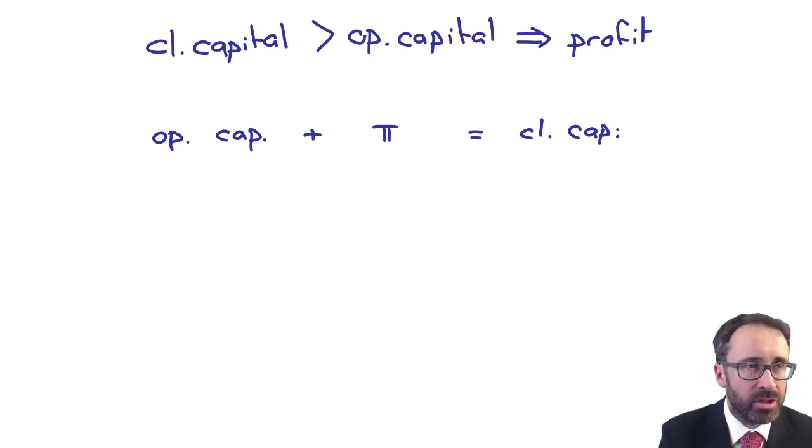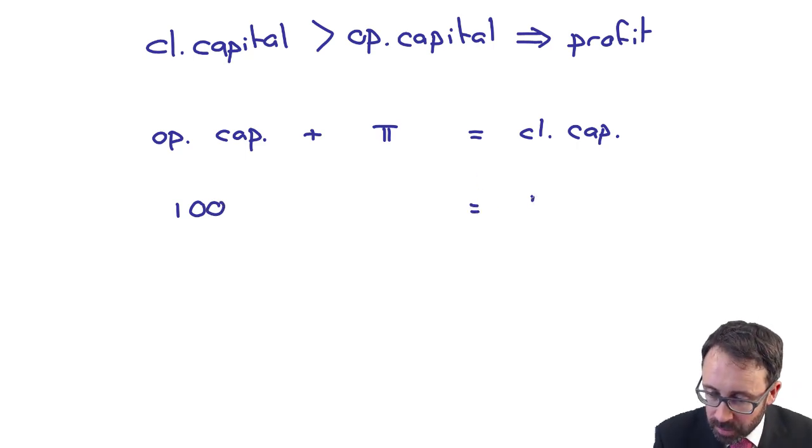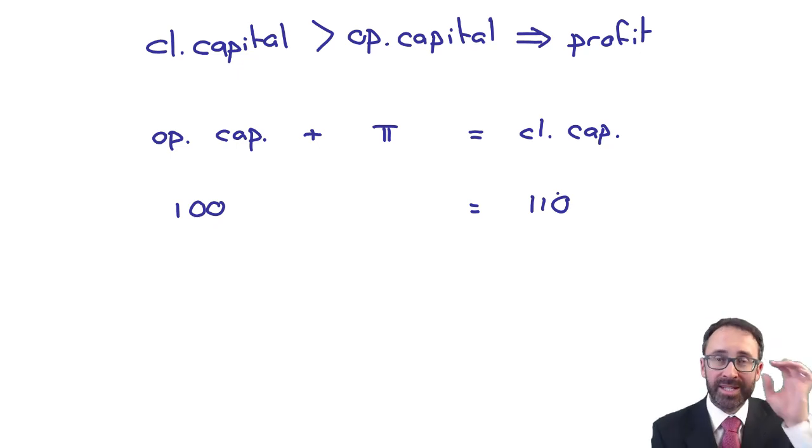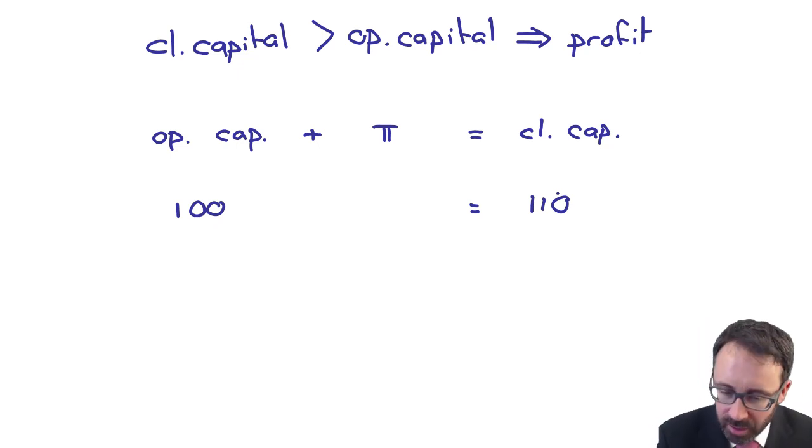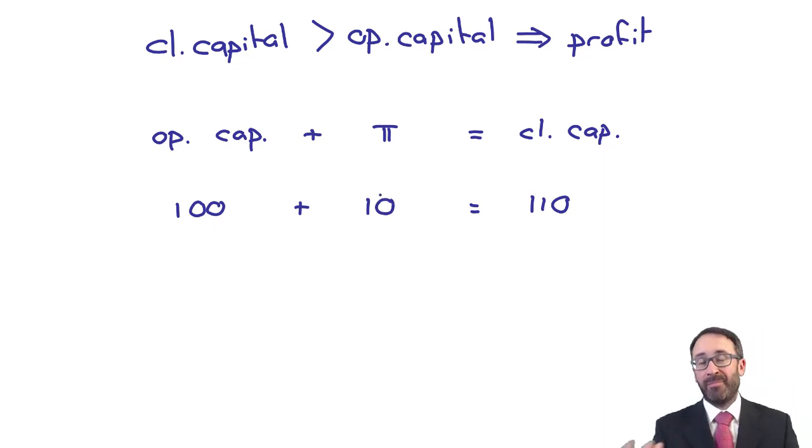So from what we've seen previously, if we just use some very basic numbers—if your opening capital is 100, if your closing capital is 110, and if the effects of inflation are not significant, then effectively that balancing figure, the difference, is your profit which is there at 10 isn't it?